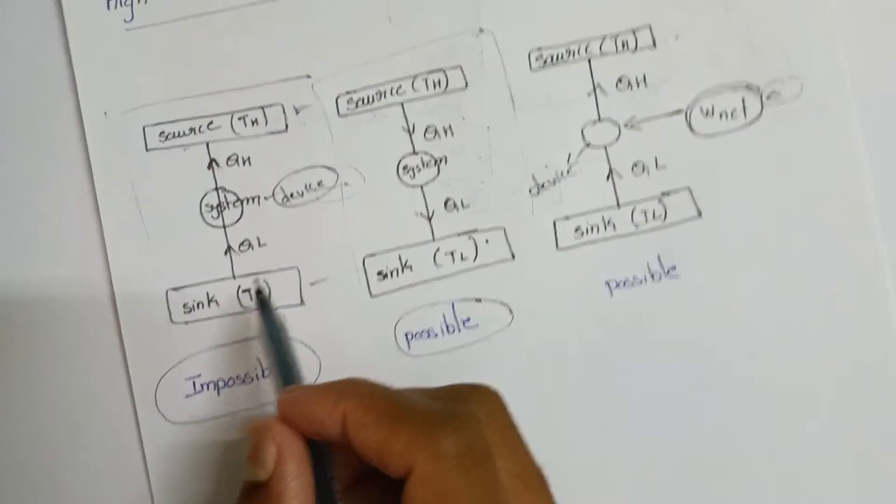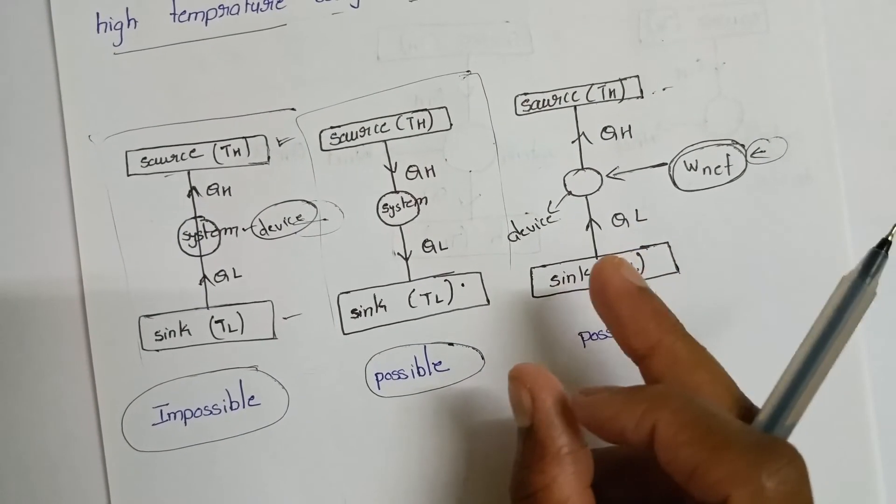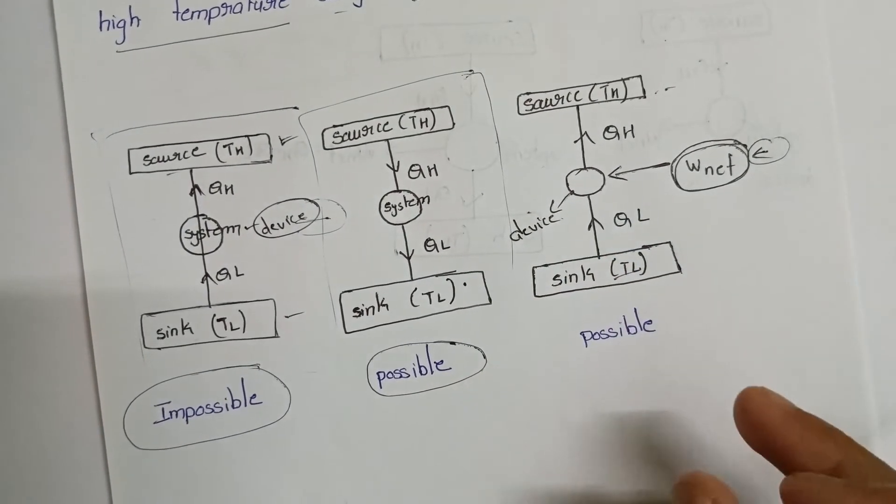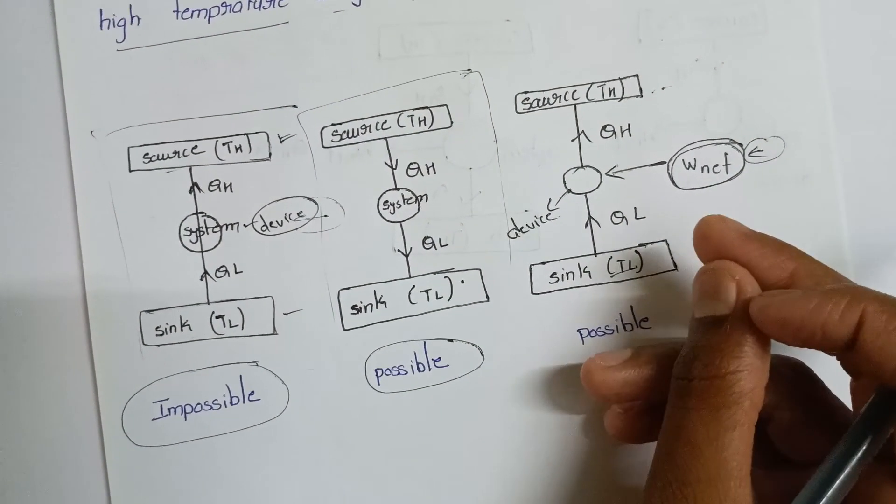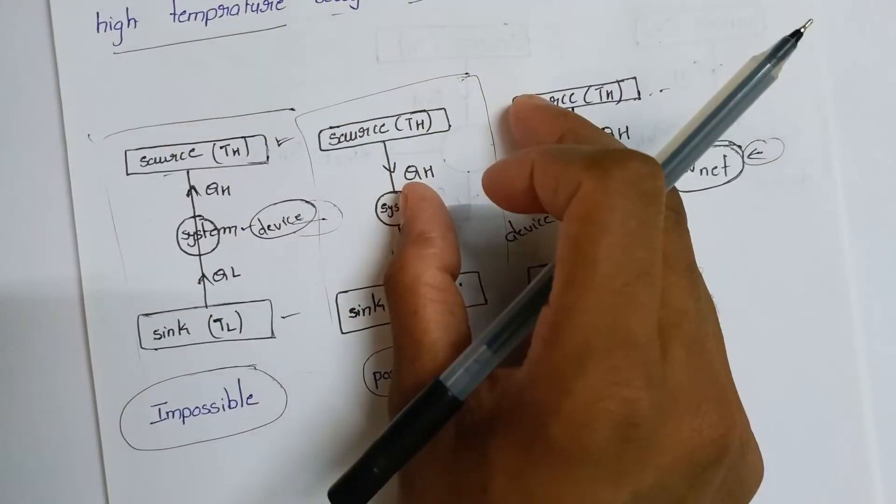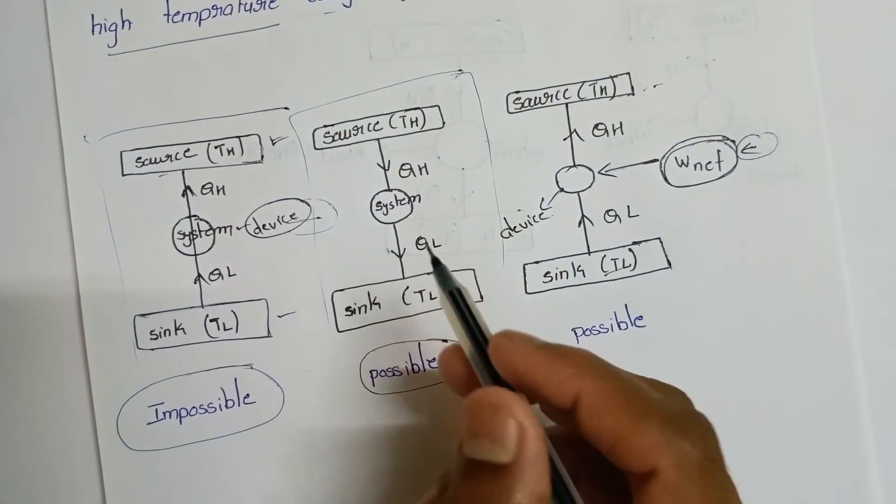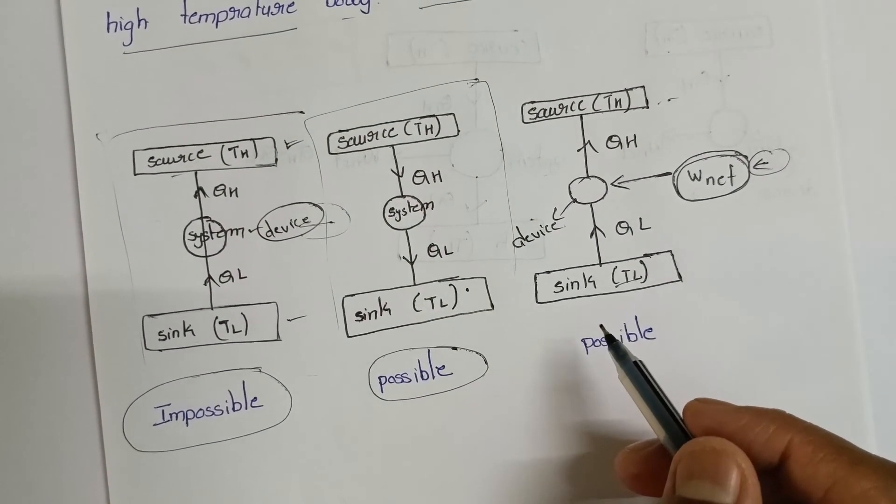The opposite, sink to source (low to high temperature) requires external work input to be possible. That is Clausius statement. Thanks for watching, please subscribe to the channel.